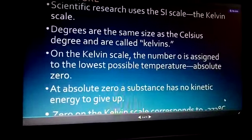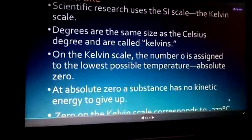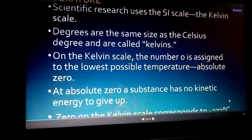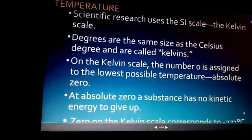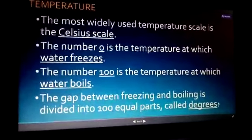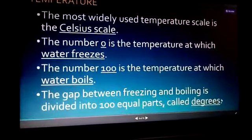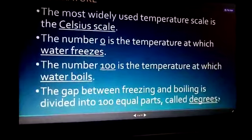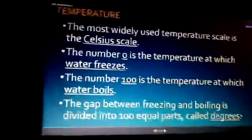When their movement gets stopped, they reach absolute zero temperature. Now here are some points about the most widely used temperature scale, which is the Celsius scale. The number zero is the temperature at which water freezes. The number 100 is the temperature at which water boils. These are all the common points that you should know very well.